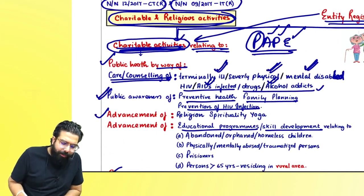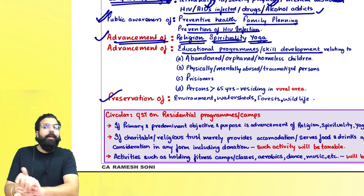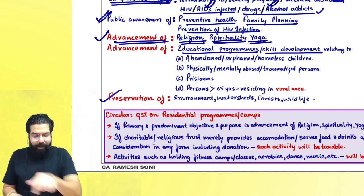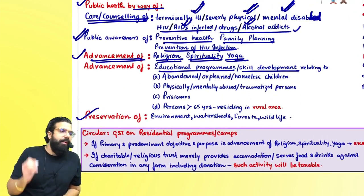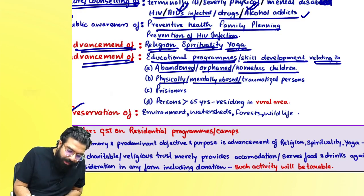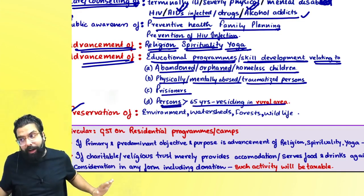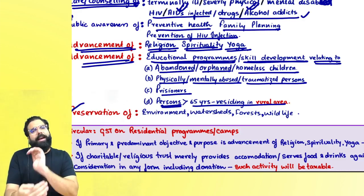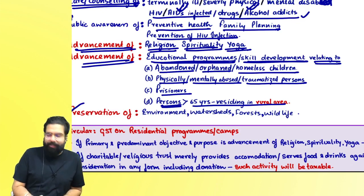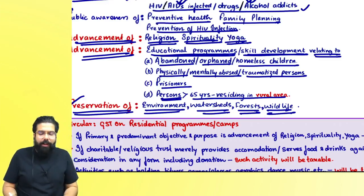If there is a charitable institution doing charitable activity relating to advancement of religion, spirituality and yoga — for example, organising yoga programmes — the government says whatever amount is charged, don't charge any GST. For educational programme or skill development relating to abandoned or orphaned homeless children, physically or mentally abused/traumatised persons, prisoners, or persons above 65 residing in rural areas — that is a charitable activity and GST will not come. Preservation of environment, watershed, forest or wildlife is also exempt. Remember: PAPE activities.